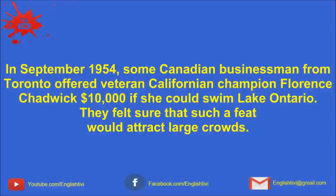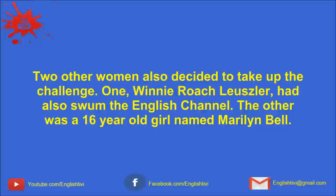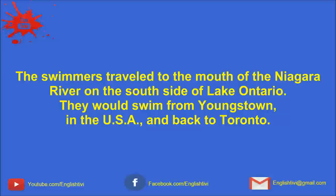In September 1954, some Canadian businessmen from Toronto offered veteran Californian champion Florence Chadwick $10,000 if she could swim Lake Ontario. They felt sure that such a feat would attract large crowds. Chadwick had swum the English Channel in both directions. However, no one, neither man nor woman, had crossed Lake Ontario. It was a 32-mile swim through cold water and difficult currents. Two other women also decided to take up the challenge. One, Winnie Roach Lousler, had also swum the English Channel. The other was a 16-year-old girl named Marilyn Bell.